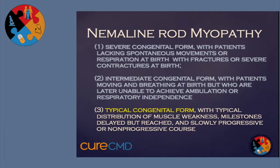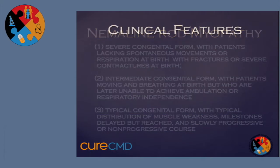If you're in the intermediate category, it doesn't really develop until later on, when the patient is trying to develop ambulatory function and muscle function of the extremities, but also respiratory independence — compared to the severe form, which is apparent right from birth. The spectrum is varied, and depending on the child's condition and when it's picked up, we'll determine which category or form they fall into.